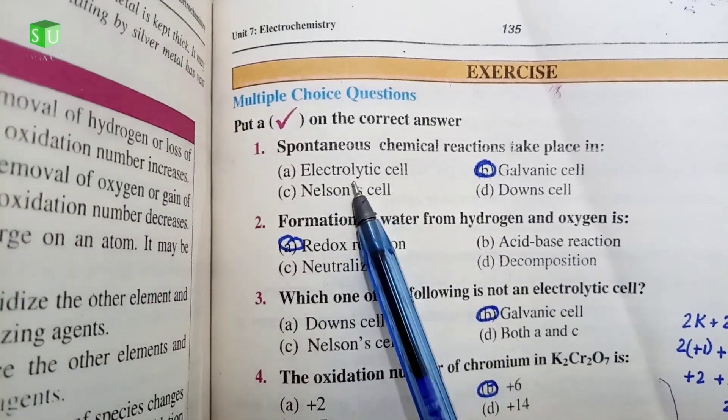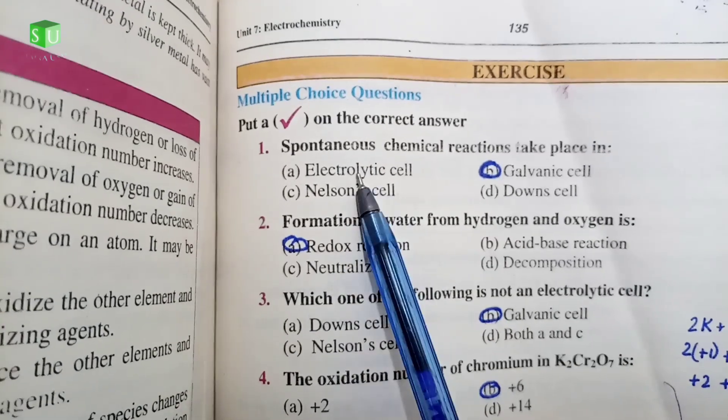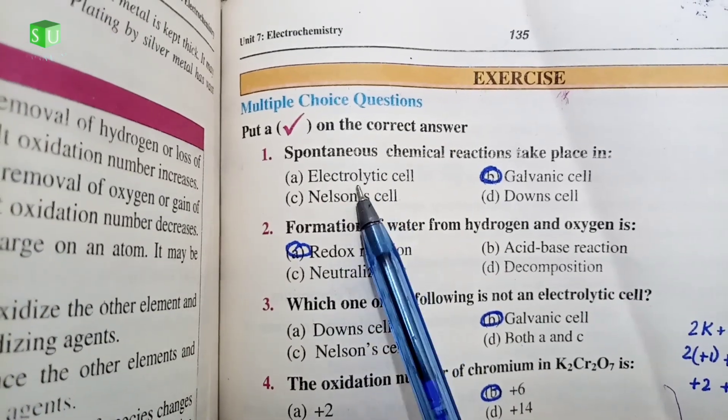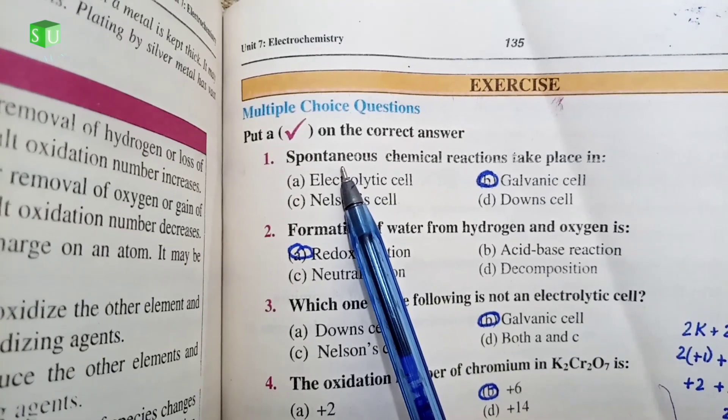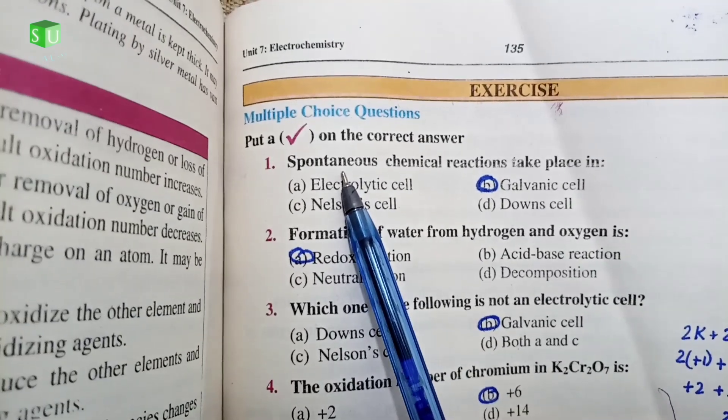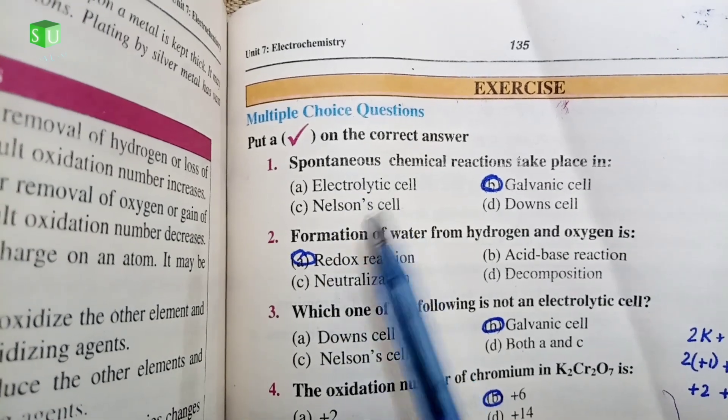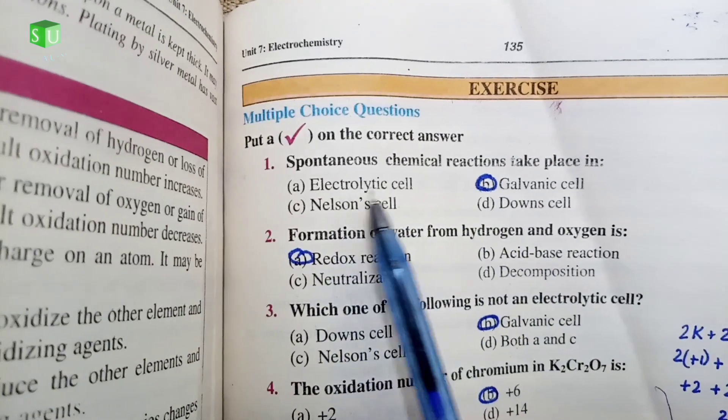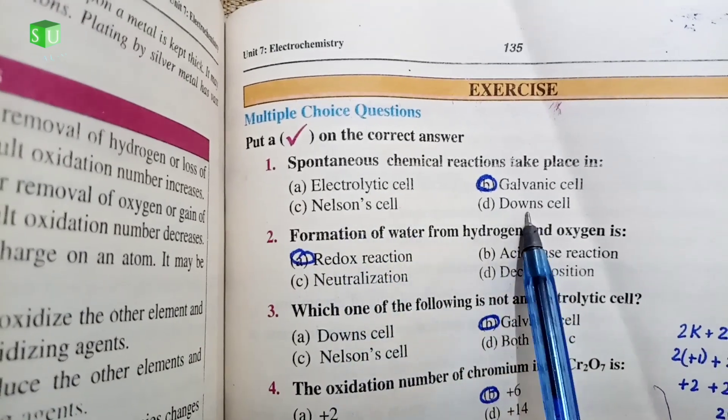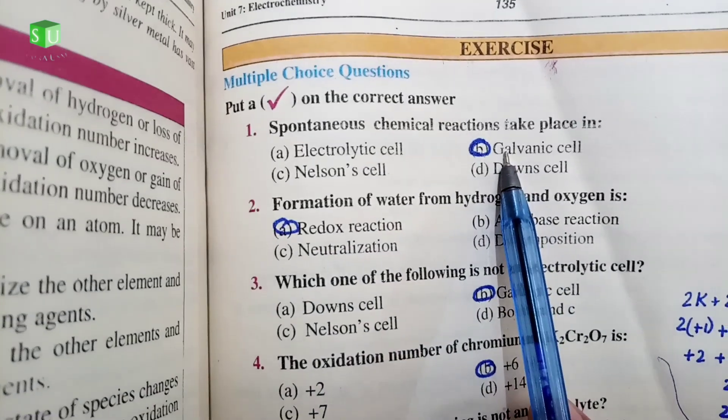The electrolytic cell is non-spontaneous chemical reaction which is carried out using electricity and energy. Spontaneous is the reaction which occurs naturally. Non-spontaneous is the reaction which is carried out using energy. So electrolytic cell is non-spontaneous, the correct answer is B.